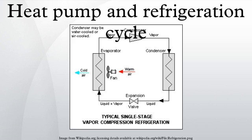Thermodynamic heat pump cycles or refrigeration cycles are the conceptual and mathematical models for heat pumps and refrigerators. A heat pump is a machine or device that moves heat from one location at a lower temperature to another location at a higher temperature using mechanical work or a high temperature heat source.